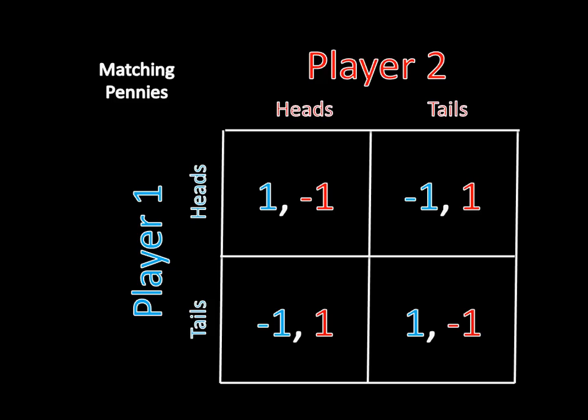Last time we explored the game matching pennies, which had a payoff matrix that looked like this. We logically concluded that the equilibrium strategy for this game would be to flip the coin, thus completely confusing your opponent and securing a payoff of zero on average. But the solution isn't so simple for most games requiring a mixed strategy Nash equilibrium.